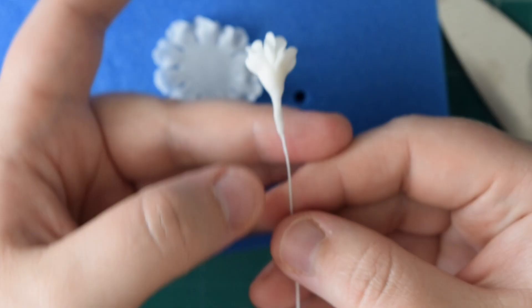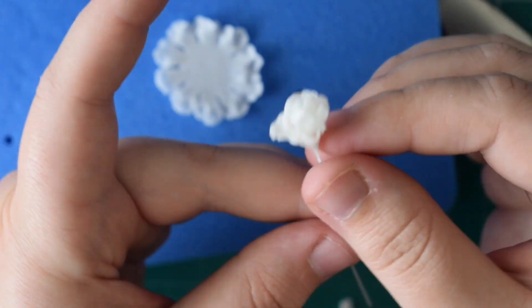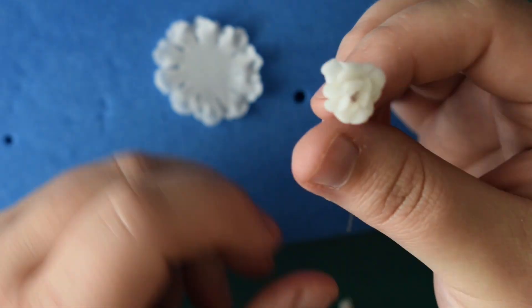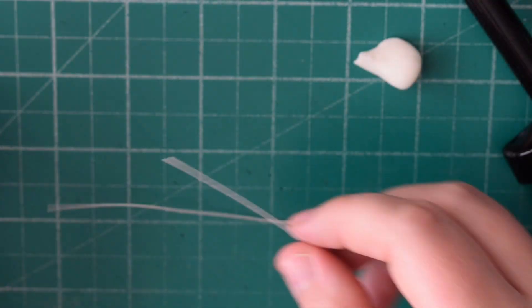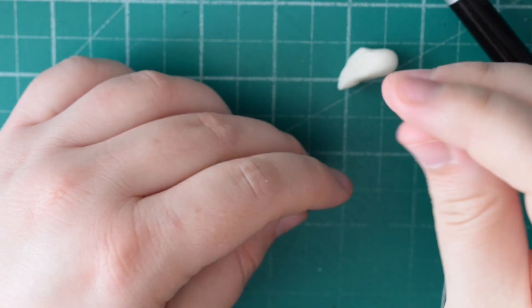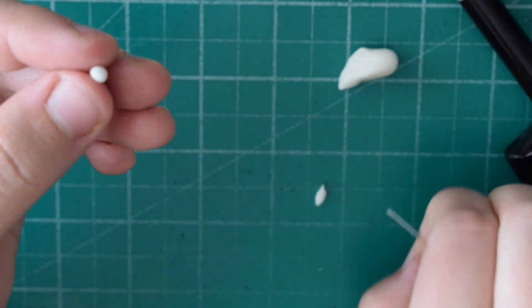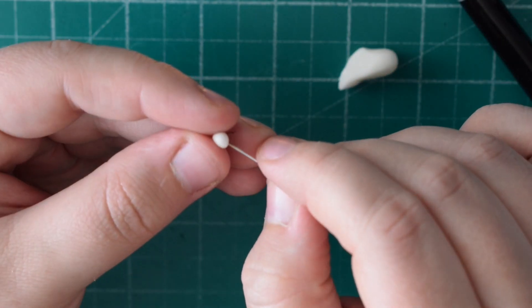Now the good thing about making these for your flowers is not a lot of people know that baby's breath is not actually supposed to go on cakes itself because it can cause stomach problems, so having a fondant option is always a good idea.